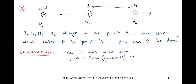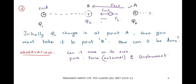We are displacing q2, so whenever there is a force and a displacement, we have done work. The external force direction is there to overcome the repulsive force. At any instant, the repulsive Coulomb force is in one direction, and we apply an equal external force in the opposite direction so that the charge moves very slowly.